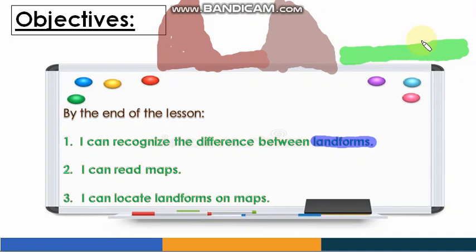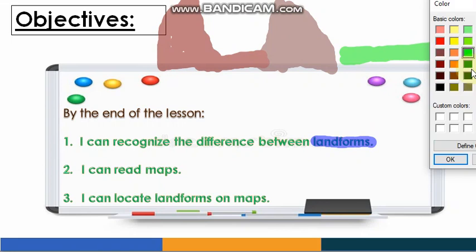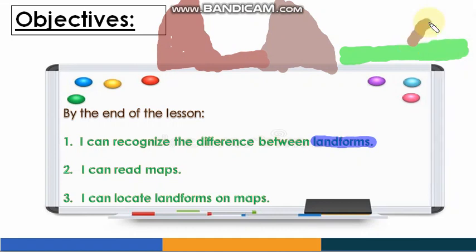And what else? Plains! Plains, everyone, are green and flat areas. Well done. Oh yes, and I forgot — there are also hills! Thank you for reminding me. What is the difference between mountains and hills? Mountains have a high peak, and hills are not as high as mountains.